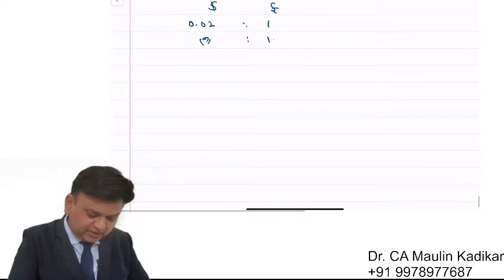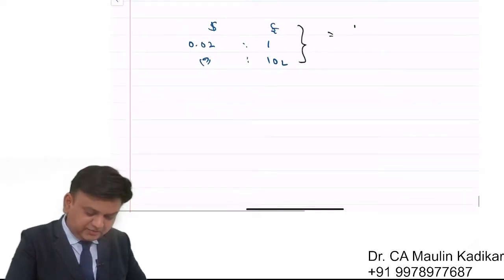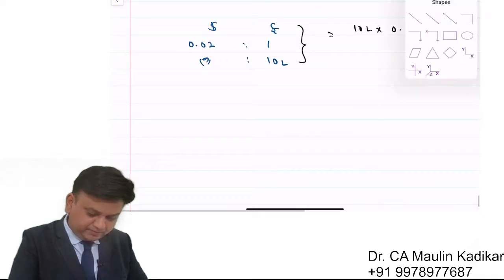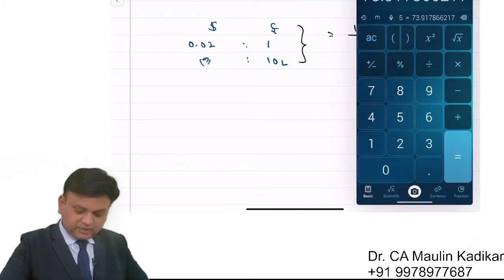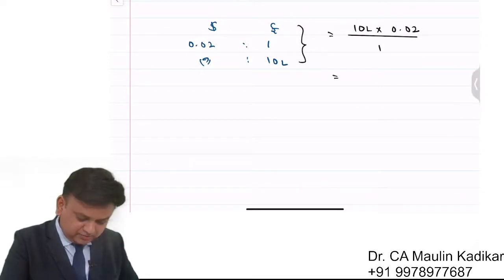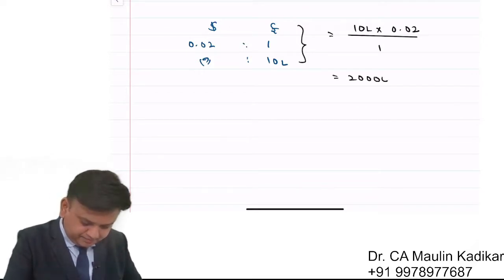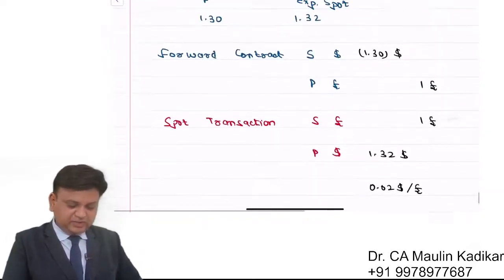This $0.02 gain applies to the entire transaction of £1 million. So the total gain is £1,000,000 × $0.02, which equals $20,000 USD. This is the speculative gain.